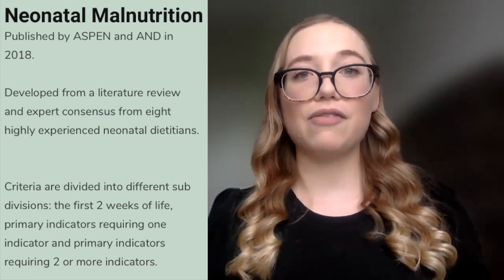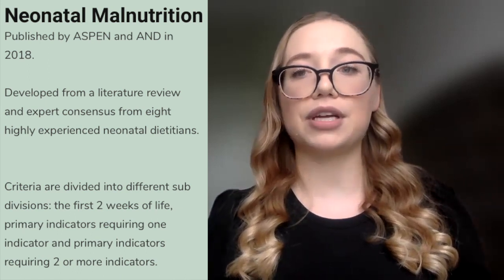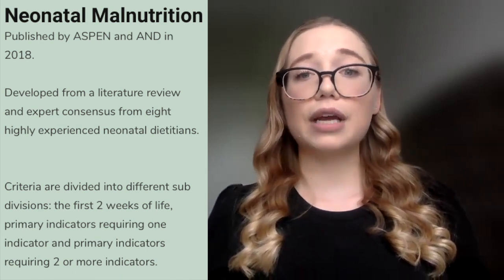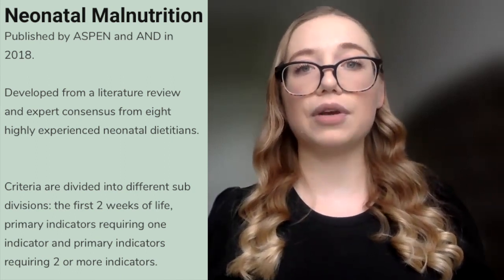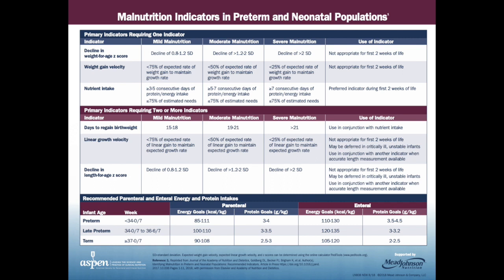Neonatal malnutrition criteria is relatively new, released in 2018 from ASPEN and the Academy of Nutrition and Dietetics after a gap was identified for patients who did not fall under the intent and use of the pediatric malnutrition criteria. This was a literature review and expert consensus from eight highly experienced neonatal dietitians. They created criteria divided into three categories: criteria for the first two weeks of life based on energy intakes; primary indicators requiring one indicator — such as weight-for-age Z-score acceleration or percentage of expected weight gain velocity; and primary indicators requiring two or more indicators, including percentage of linear growth velocity, length-for-age Z-score acceleration, and days to regain birth weight.